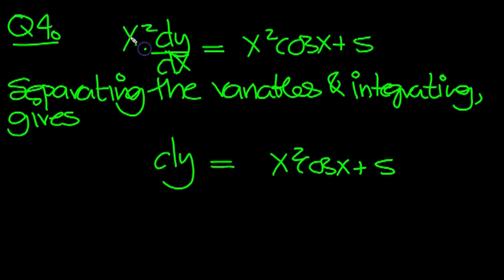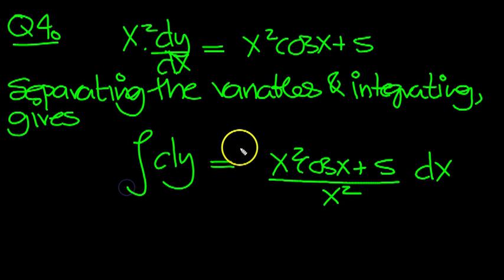Now we're going to need to move this x squared from times down to divide. So there it is there, divide. From one side to the other side, divide. And then the dx can come up from that side to times on this side. There's the variables separated then and integrating gives.